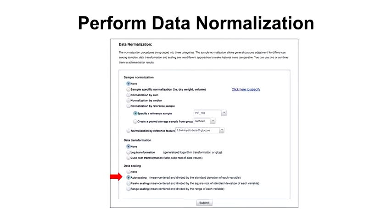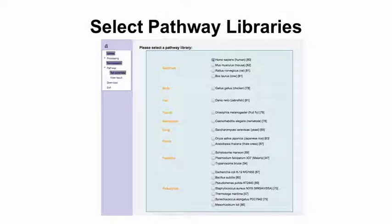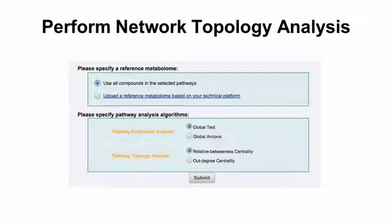These are the parameters that are preferred overall — they produce a nicely normalized distribution. Because we know we're working with humans — Homo sapiens — we can choose our pathway library. Obviously, if you chose the wrong pathway library, you'd end up with something that's meaningless. From this stage, once you've chosen the correct pathway, we can start looking at the network topology analysis — using all compounds in the pathways, doing both a global test assessment and a relative betweenness centrality assessment.